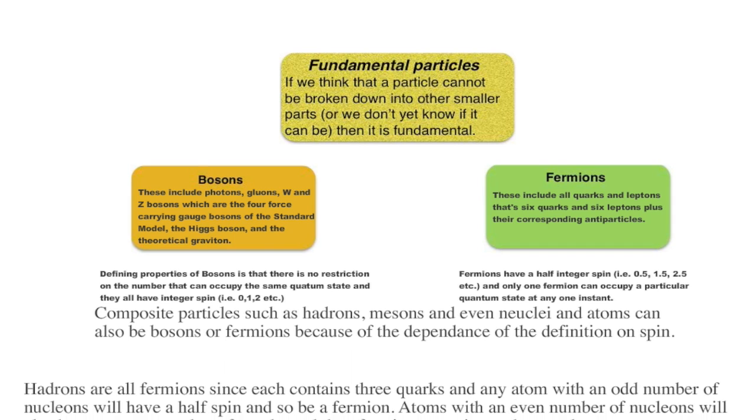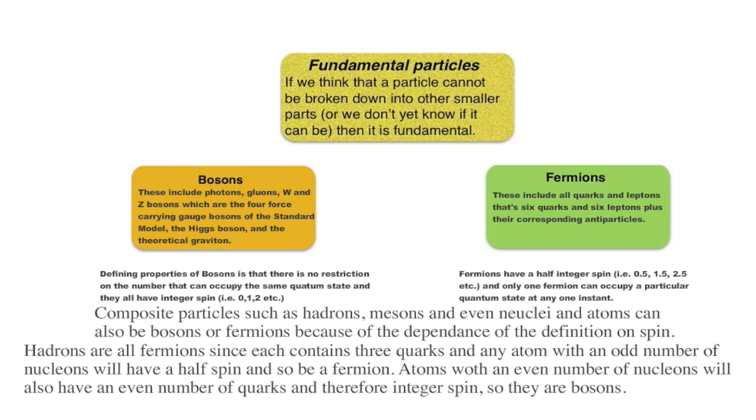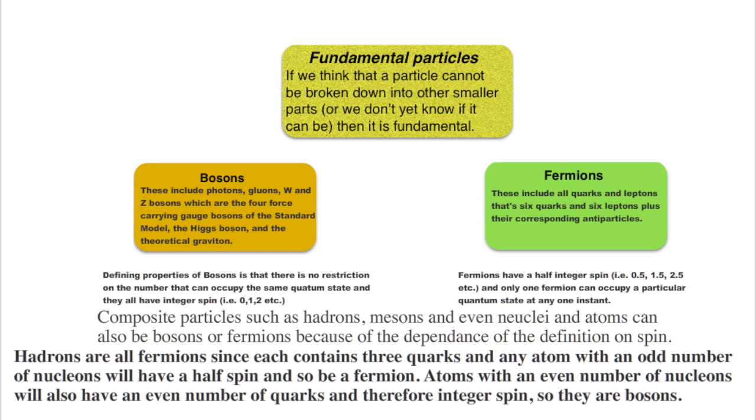For example, all hadrons contain three quarks and each quark has a half spin. Since they have three quarks, each hadron must also have a half integer spin. Furthermore, if an atom has an odd number of nucleons (a nucleon is either a proton or a neutron), it will have an odd number of quarks, and therefore a half integer spin, and so it will be a fermion.